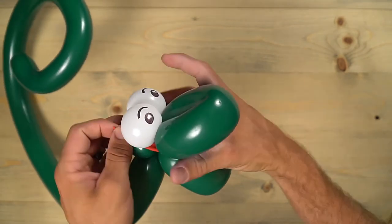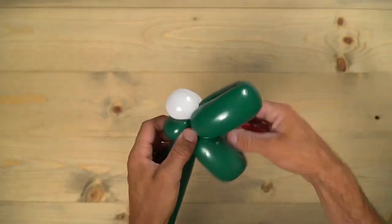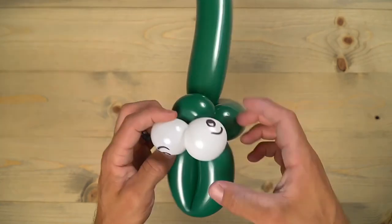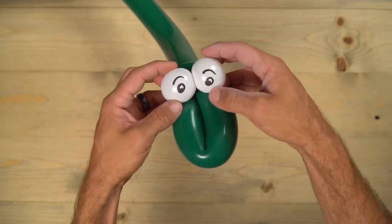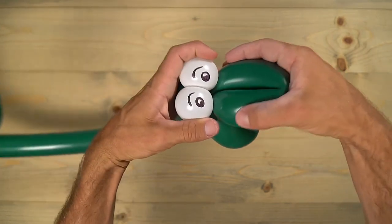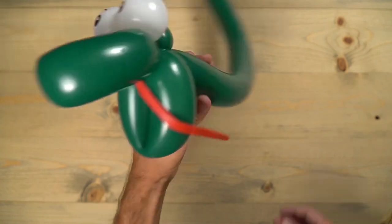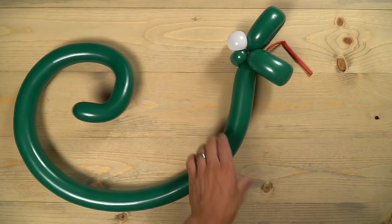At this point you might have to readjust the eyeballs, in which case you might want to draw the eyes on last, which I usually do, but I didn't do for this tutorial. That's how it looks. Good job guys, you just made the balloon snake. Looks good.